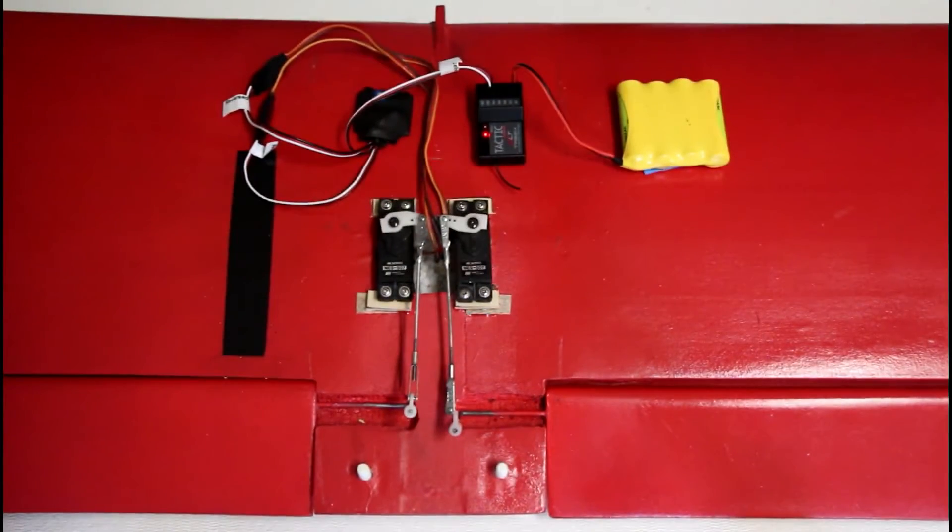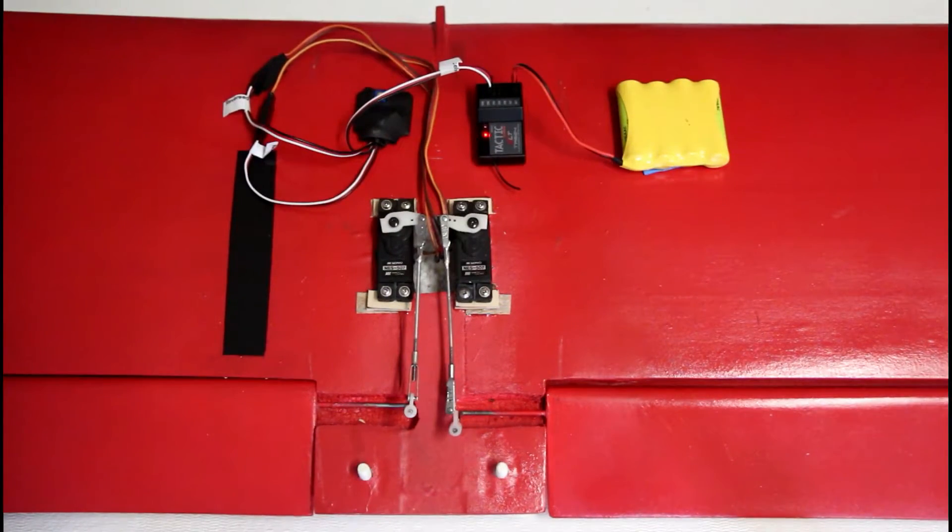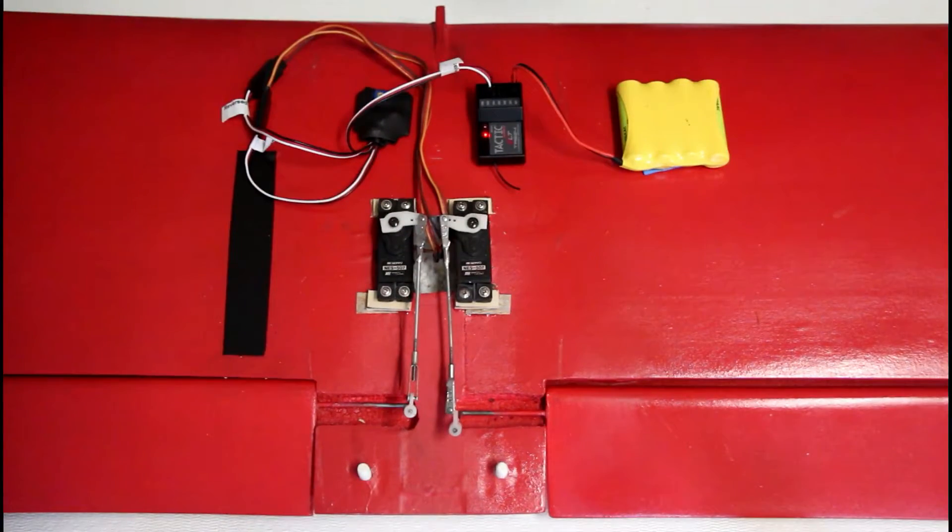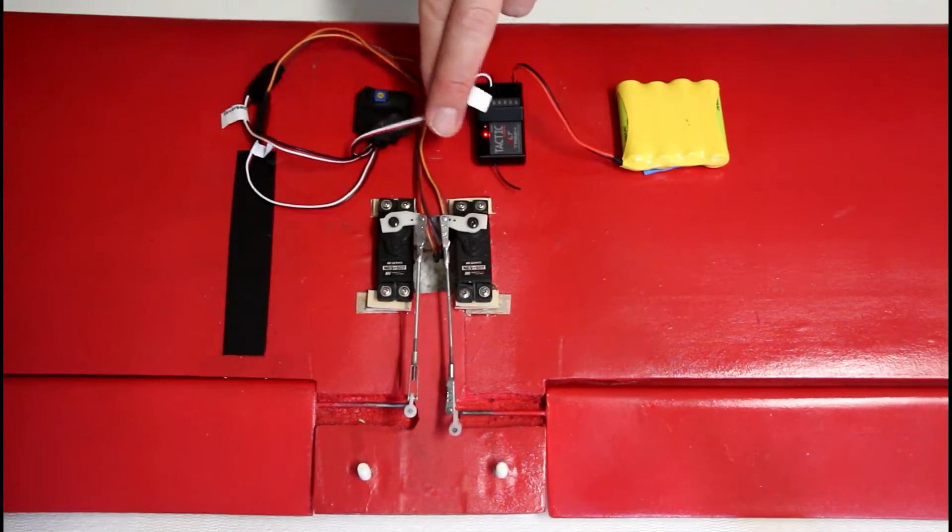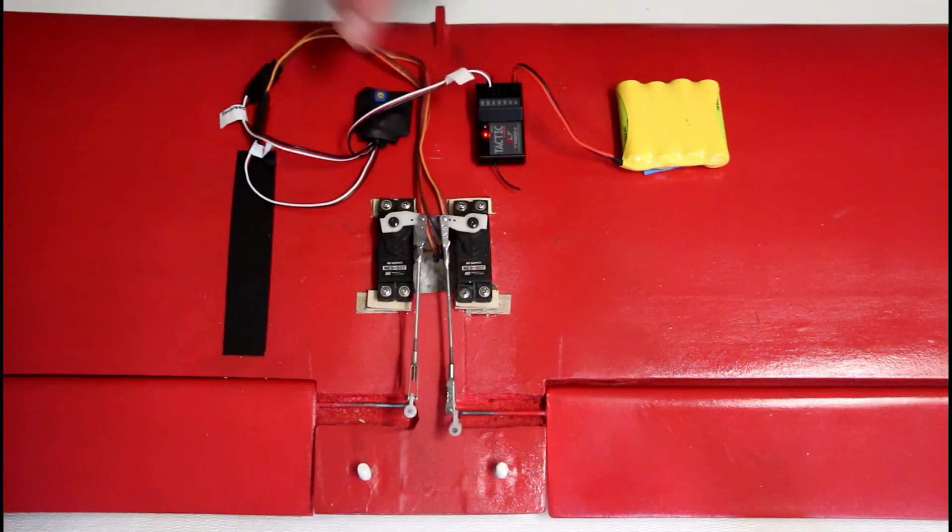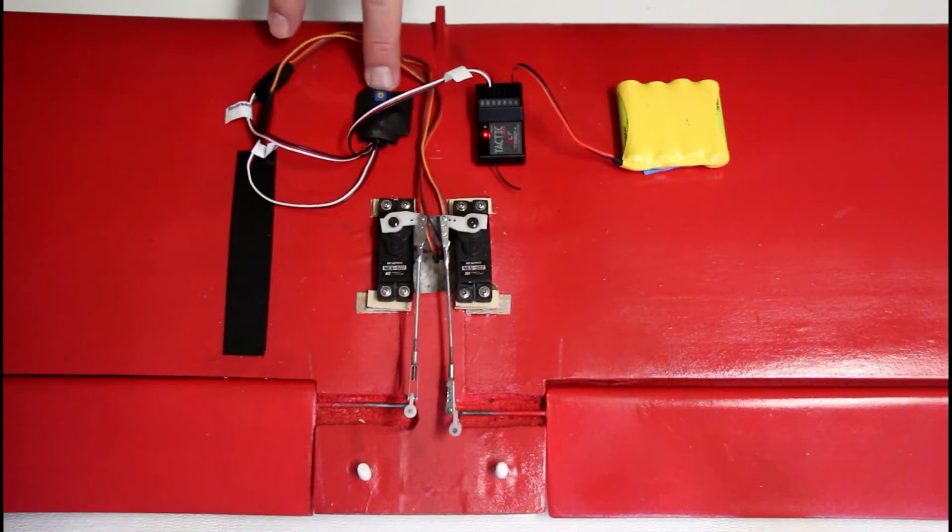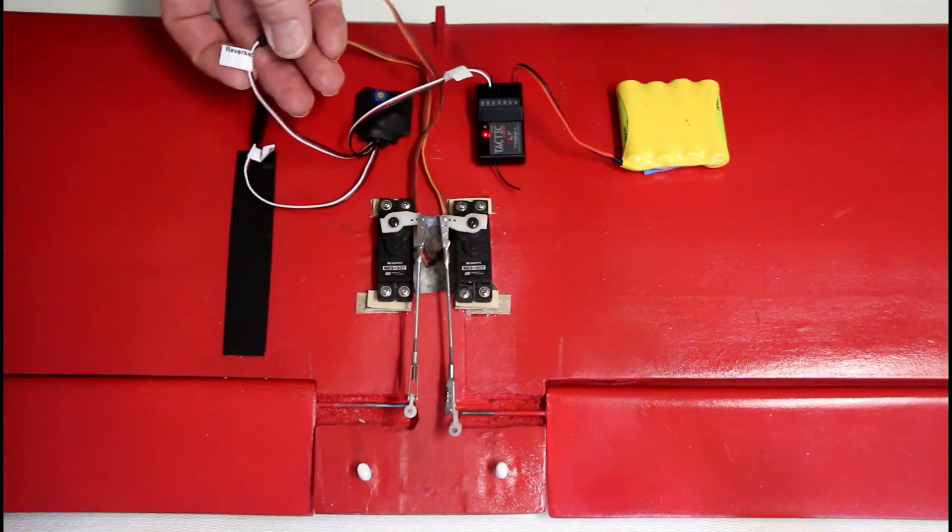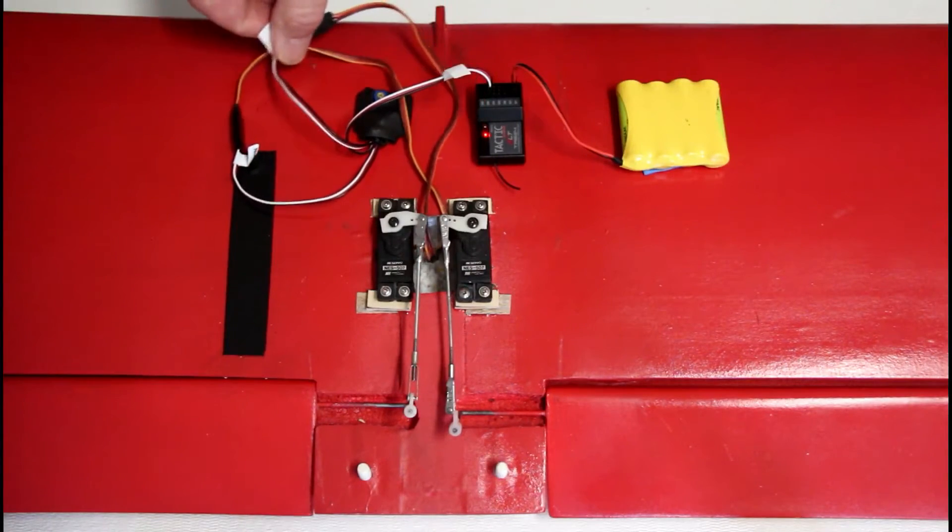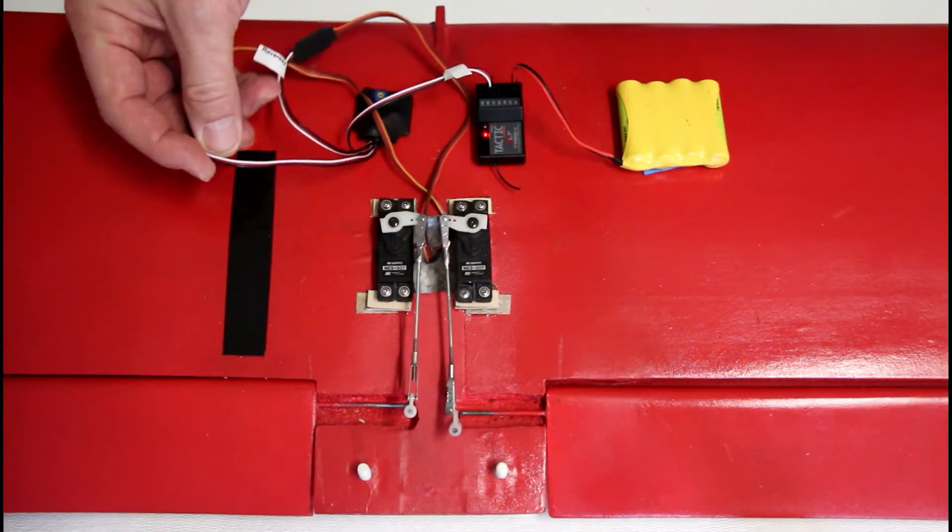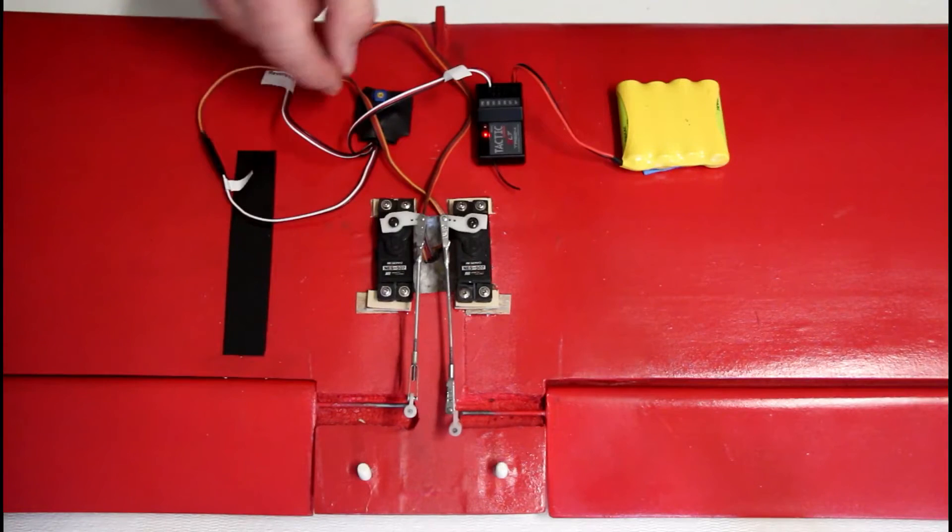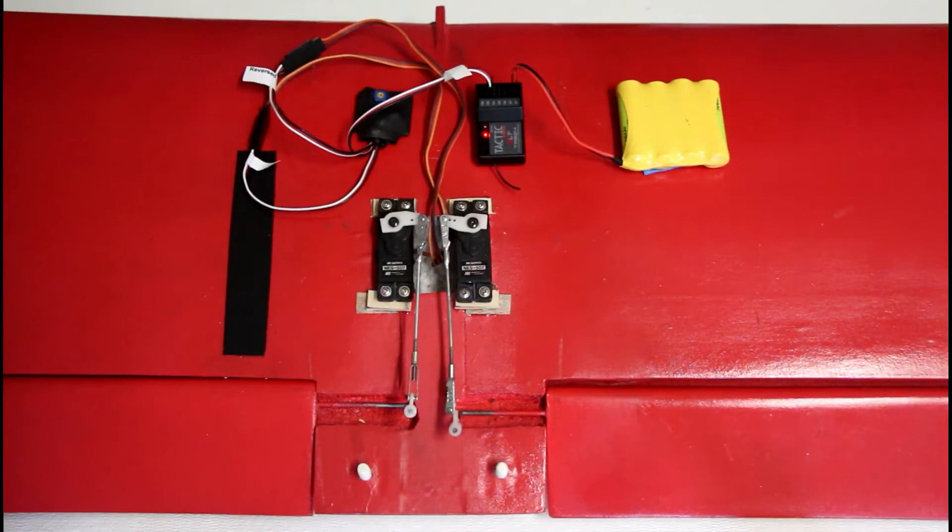Okay, so now what I've done is I have put in a Y-harness, but this Y-harness is a little bit different in that it has a lead that goes to the receiver and then it has the two leads that go to the servos. However, this channel is reversed and then this channel is normal. So in other words, it reverses one of the two, and whichever one you reverse is not important.